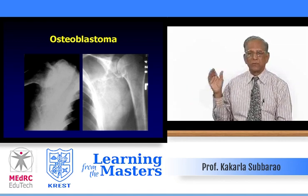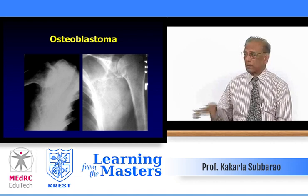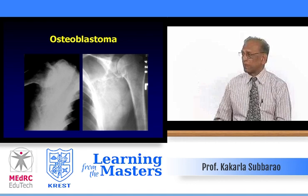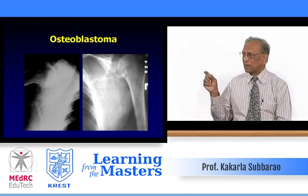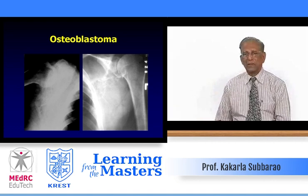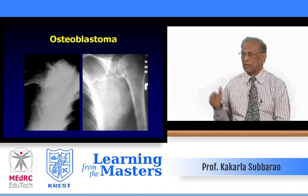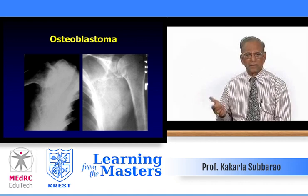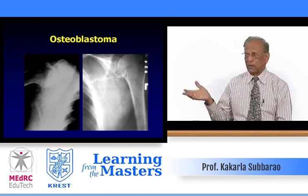Soft tissue lipoma can show calcifications due to fat necrosis and saponification. Lipoma can occur in soft tissues, parosteal, intraosseous, or as a hemangio-lipoma often seen in the vertebrae of older adult females. On the left side, a lytic lesion in the epiphysis only with possible calcifications — typical of chondroblastoma. On the right side, a lytic area restricted to the metaphysis, possibly with some epiphyseal extension — again chondroblastoma, but with the major portion in the metaphysis rather than the epiphysis.